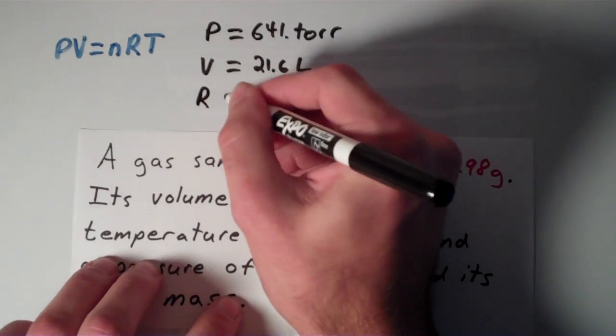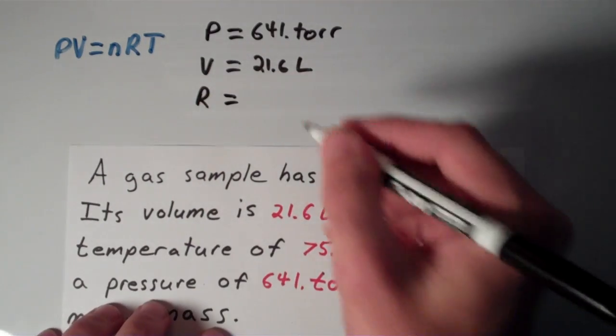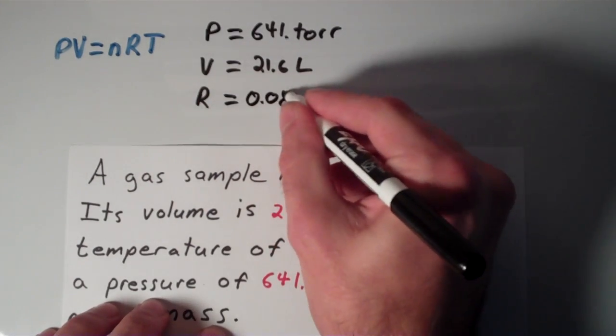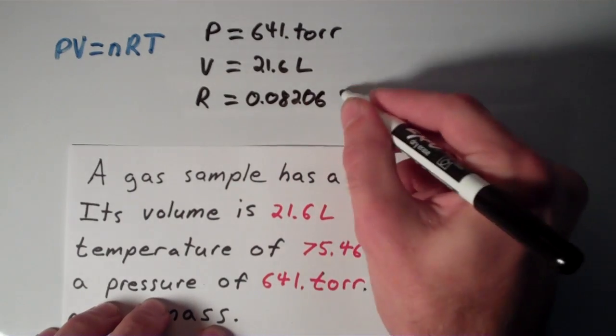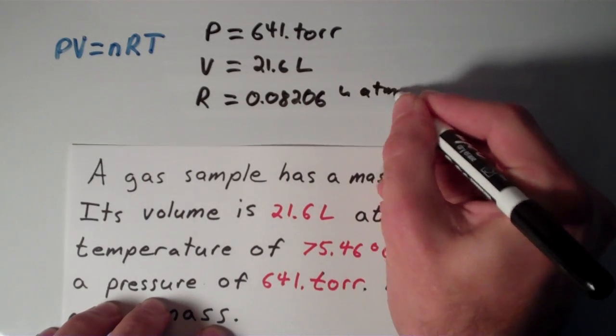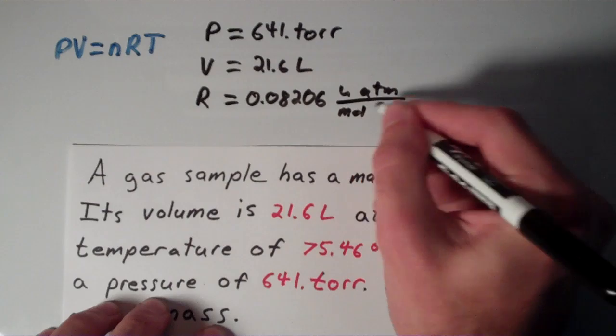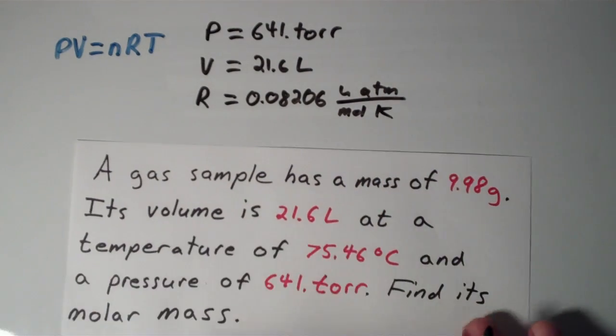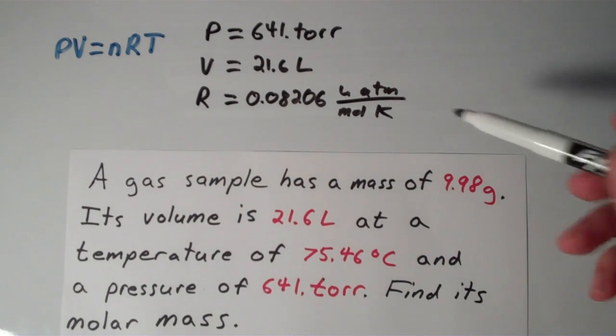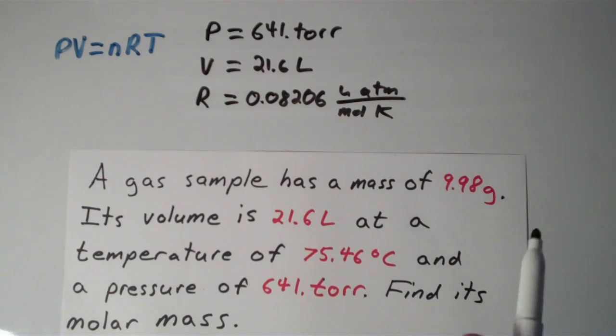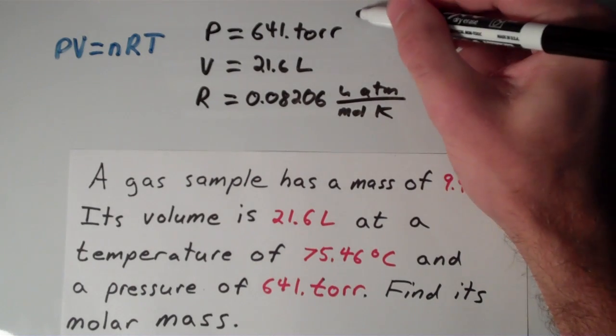My R, that's just my gas constant, which is 0.08206 liters times atmospheres over moles times kelvins. And notice that our gas constant contains the unit atmospheres as the pressure unit, so that means we have to convert this 641 torr into atmospheres. So I'm going to go ahead and do that.